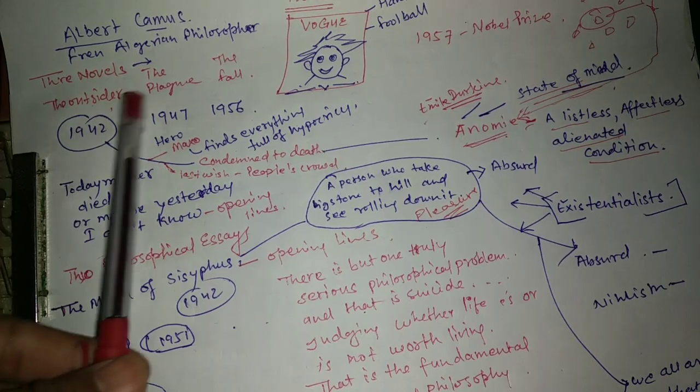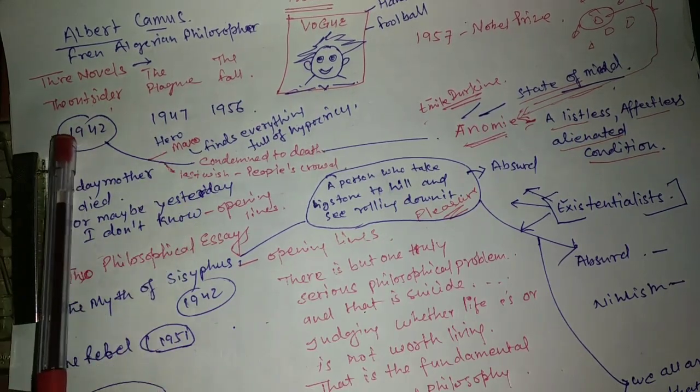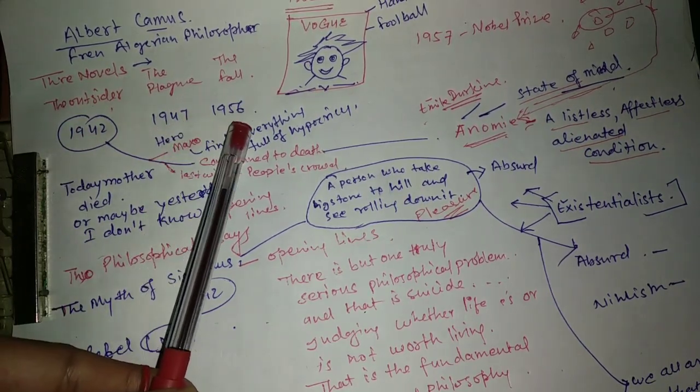The first novel was The Outsider, The Plague and The Fall. They were written in 1942, 1947 and 1956.